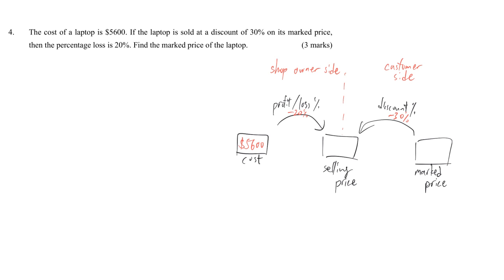The relation is really clear. Our target is to get back the market price here. So from $5,600, we can get the selling price. From the selling price, we can chase back to get the market price.